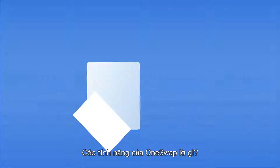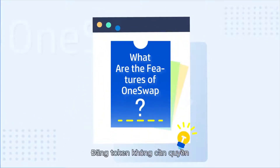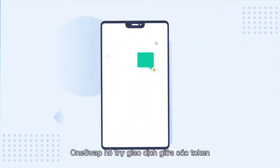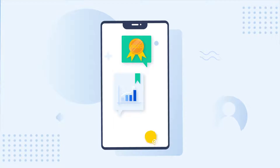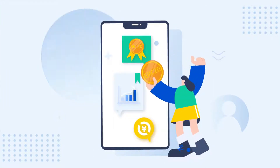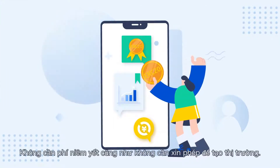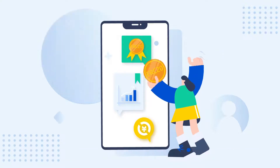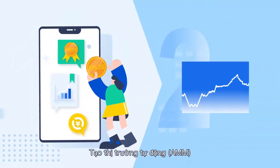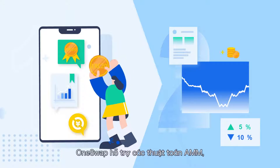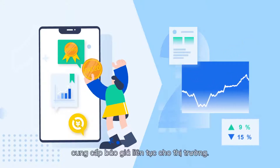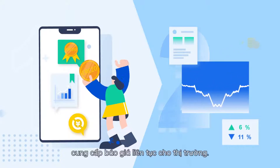What are the features of OneSwap? Permission-free token listing: OneSwap supports trading between tokens that meet the ERC-20 standard. No listing fee nor permission is needed for creating a market. Automated market making (AMM): OneSwap supports AMM algorithms so as to provide continuous quotation for the market.